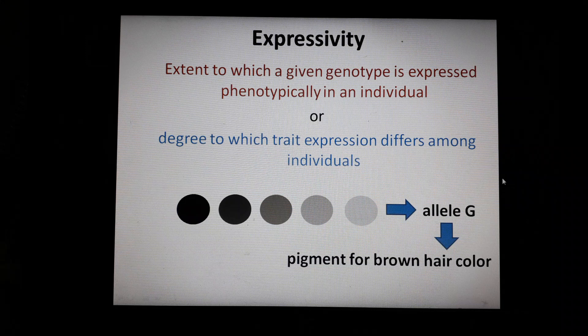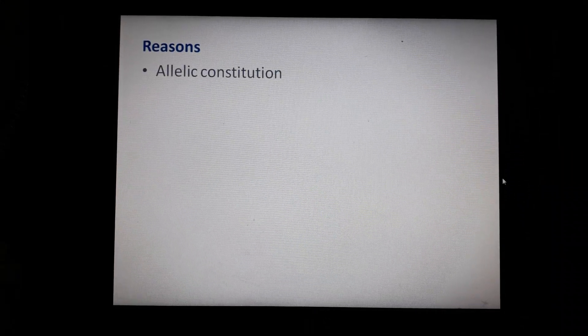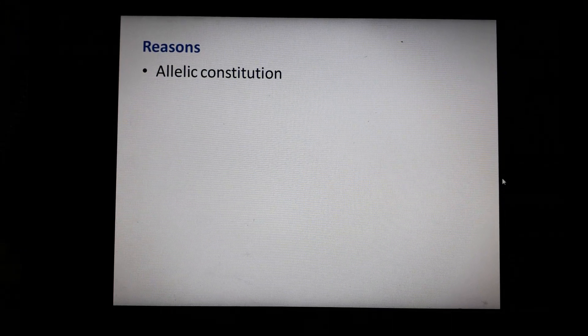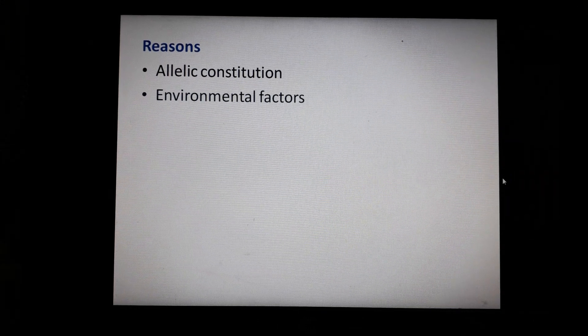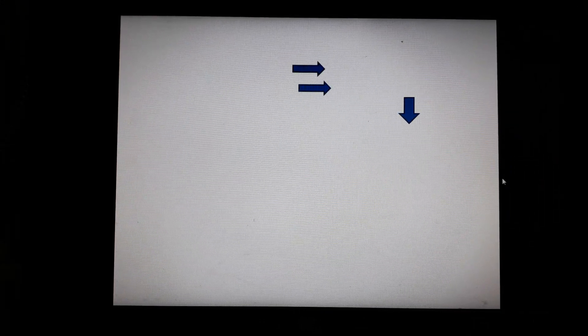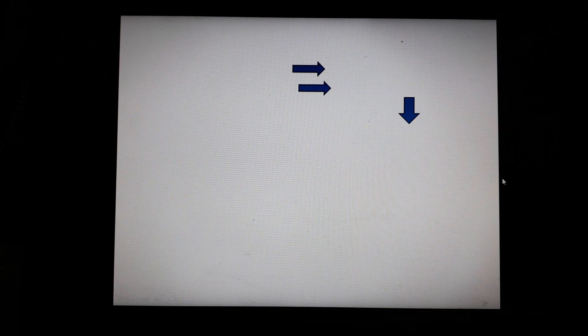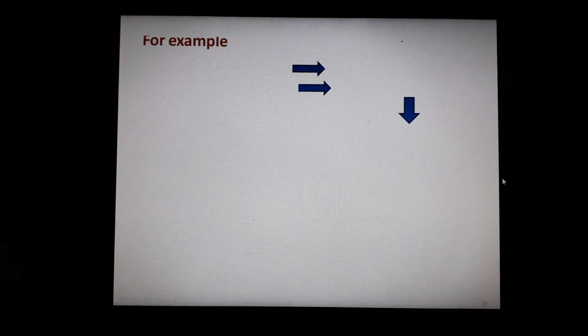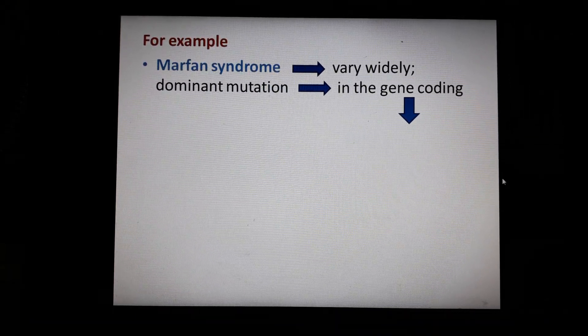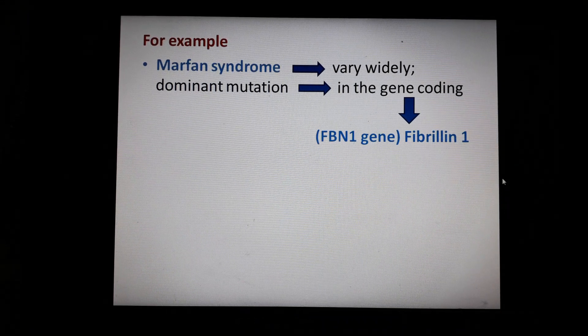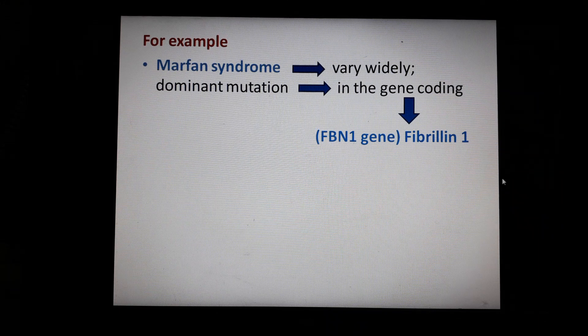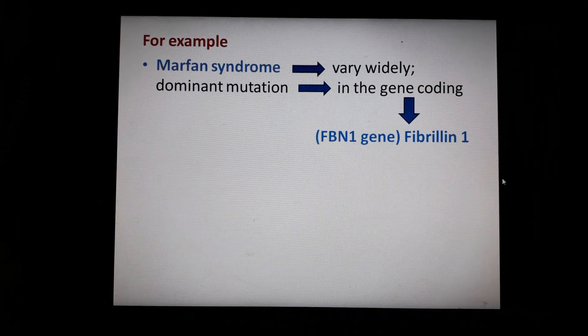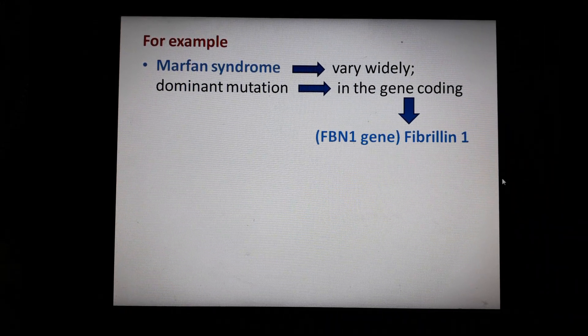Now let's look at the reasons why this happens. First example is Marfan syndrome. Marfan syndrome varies widely and its reason is that there is a dominant mutation in the FBN1 gene which is responsible for the production of Fibrillin 1.